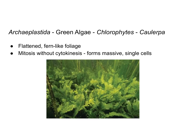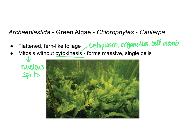Caulerpa is another type of chlorophyte that has flattened fern-like foliage. Interestingly, the cells go through mitosis without cytokinesis. Mitosis is the splitting of the nucleus, while cytokinesis is when the rest of the cell — the cytoplasm, organelles, and cell membrane — all separate. Because cytokinesis does not occur, you end up with very large cells that have multiple nuclei, since the nucleus and chromosomes are being copied but not split into separate cells.